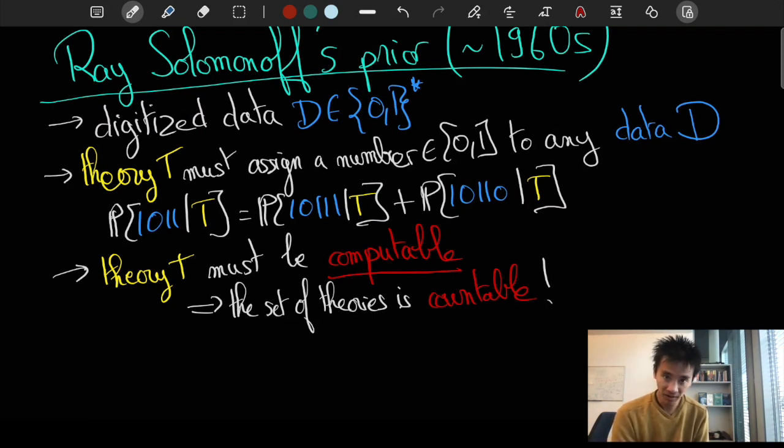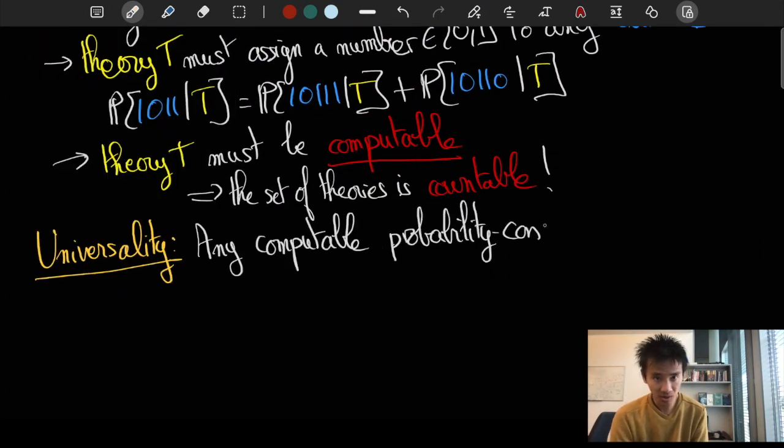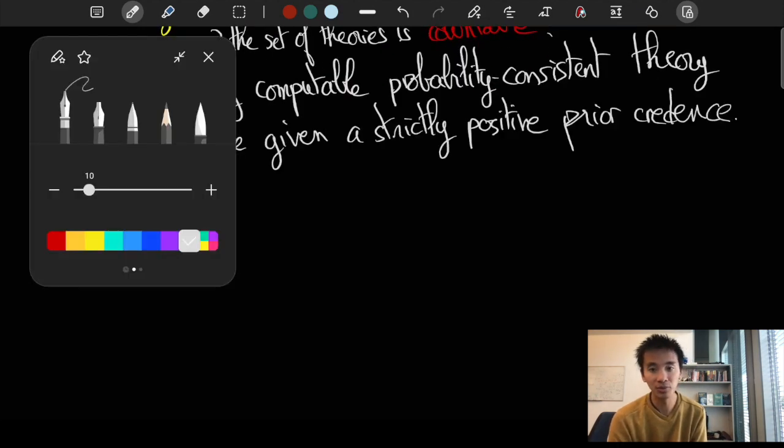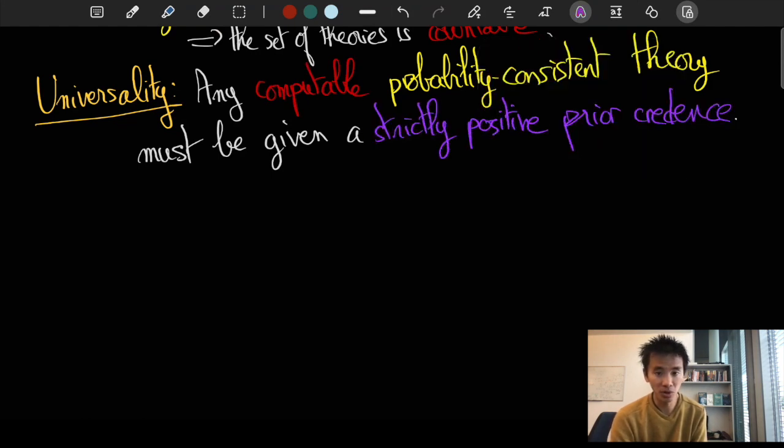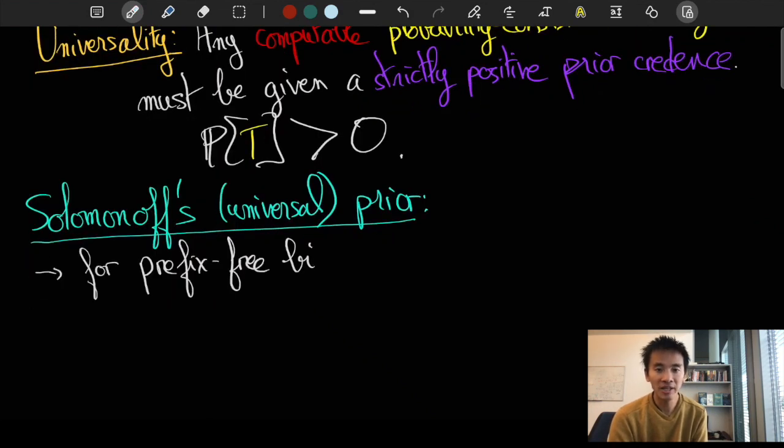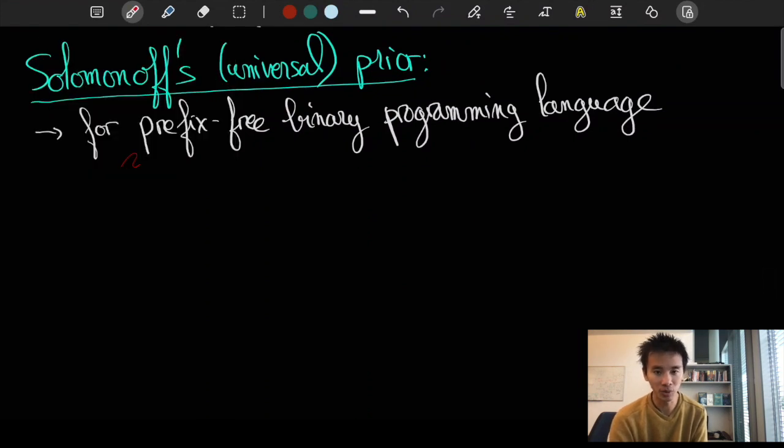In this context, Solomonoff argued that any reasonable prior need only be universal, which simply corresponds to assigning a strictly positive credence to any computable probability program T. In fact, for reasons I won't dwell too much on today, Solomonoff identified a particularly natural prior in the context of prefix-free binary programming languages such as the machine language of a universal Turing machine.